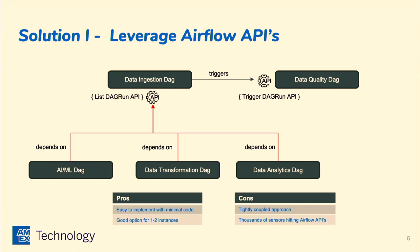One challenge with this approach: when we whiteboarded and did a quick POC, we realized it would lead to a lot of polling on our Airflow instances. If your instance is really popular — like an ingestion instance with so many jobs running — you'd have to scale not just for jobs but also for all the API hits. So we rejected that idea. Although it was very easy to implement with operators and sensors, we didn't proceed because of those cons.